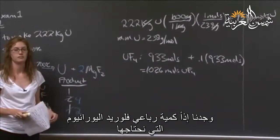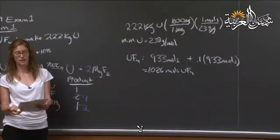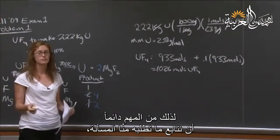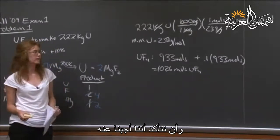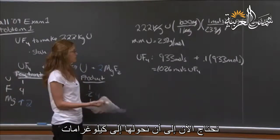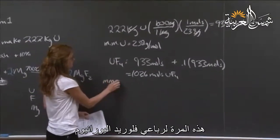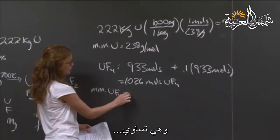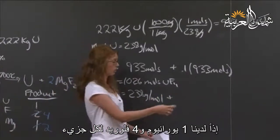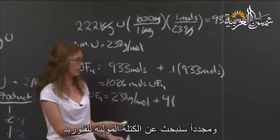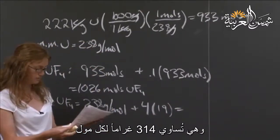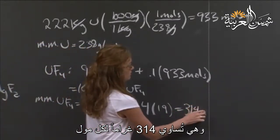We found the amount of uranium tetrafluoride we need in moles. Are we done? No — going back to the question, it asks for the answer expressed in kilograms. It's always important to keep track of what the question is asking. We have uranium tetrafluoride in moles, so now we need to convert to kilograms. We need the molar mass of uranium tetrafluoride: one uranium plus four fluorides. Looking up the molar mass of fluorine on the periodic table, we get 314 grams per mole.